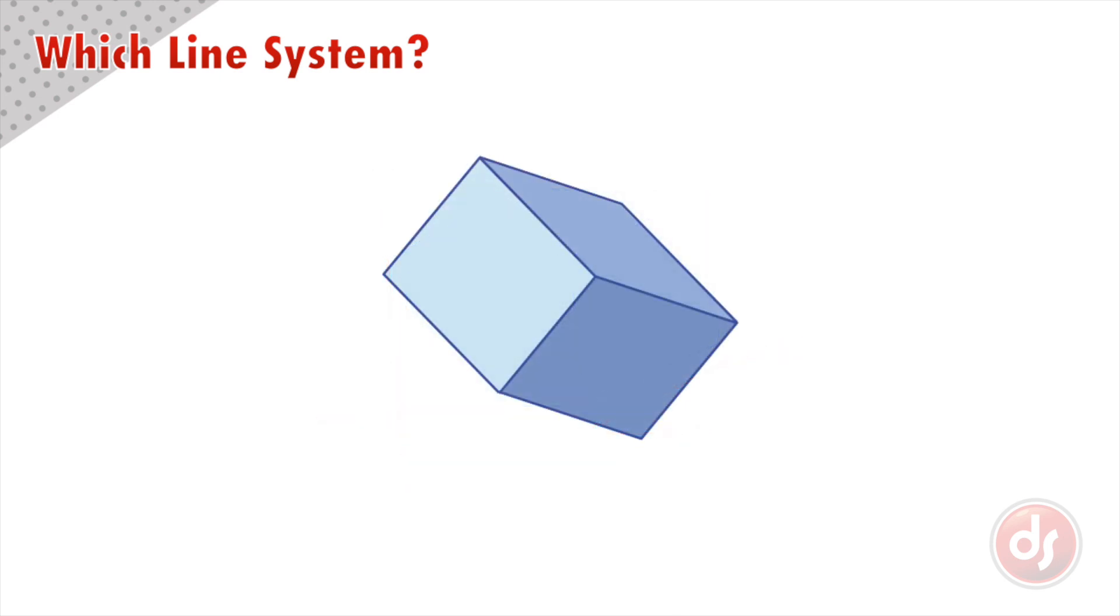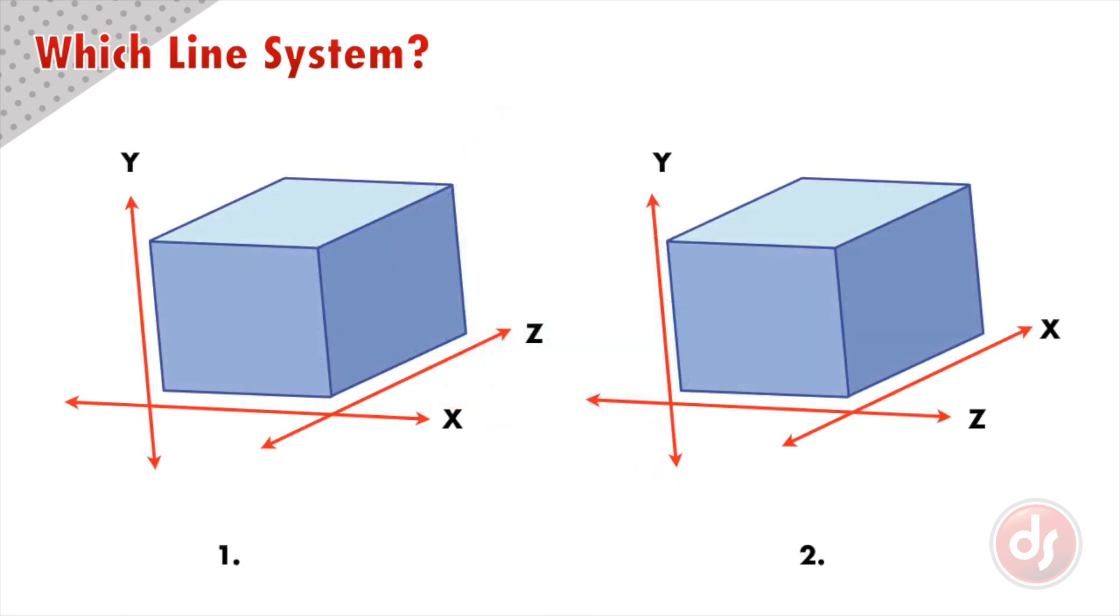Now I have tipped the box and labeled the line systems again with X, Y, and Z. But this time I will switch the order of all three line systems. Because the box is tipped in space, it is harder to tell which order would be correct. If there is nothing to tell us which is the front side, box one and box two can both be correct.